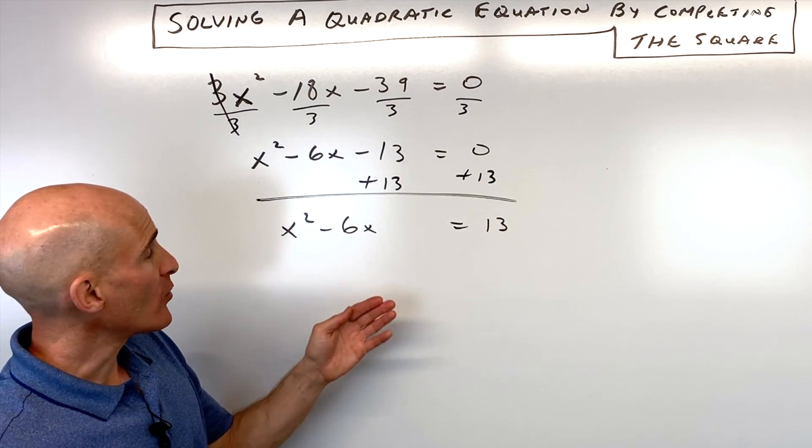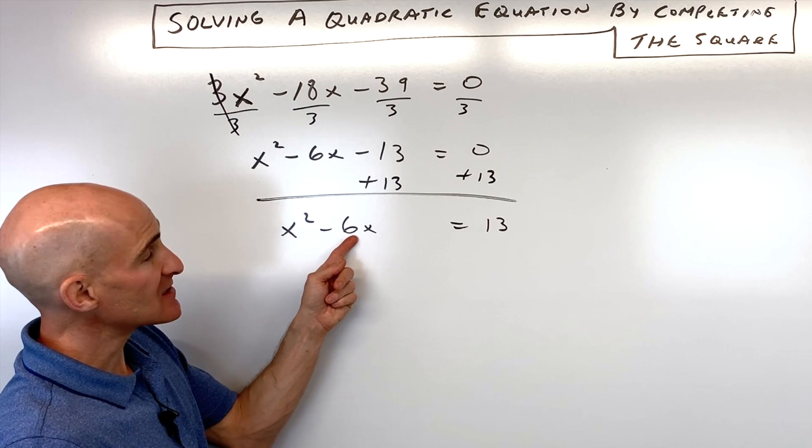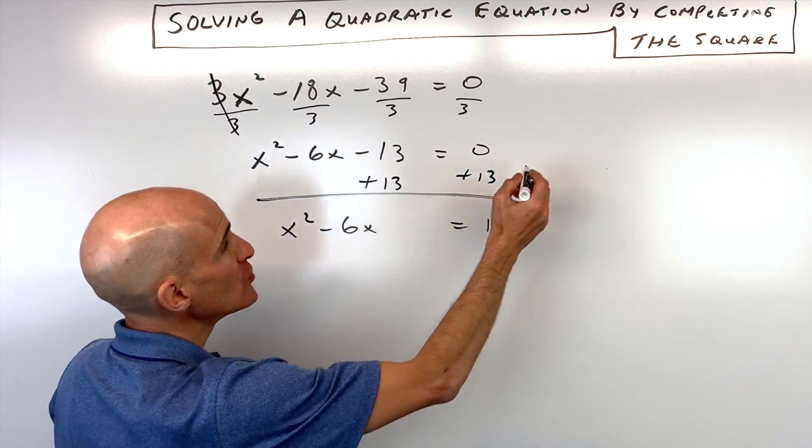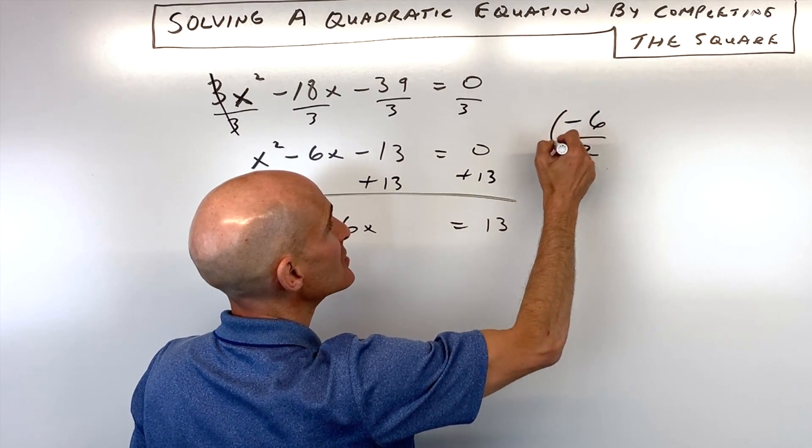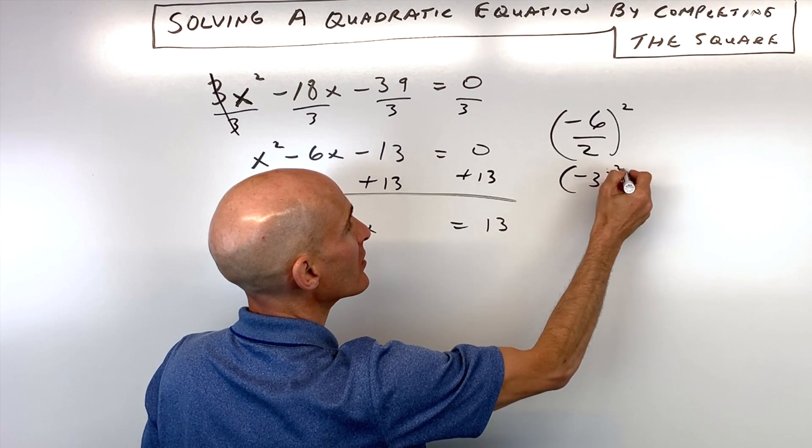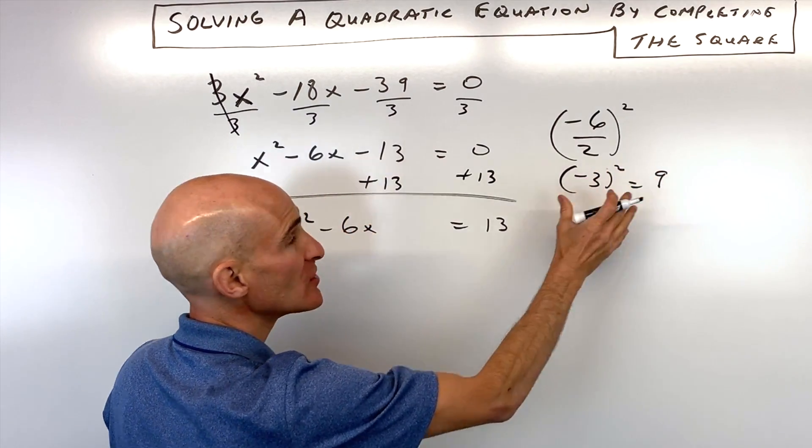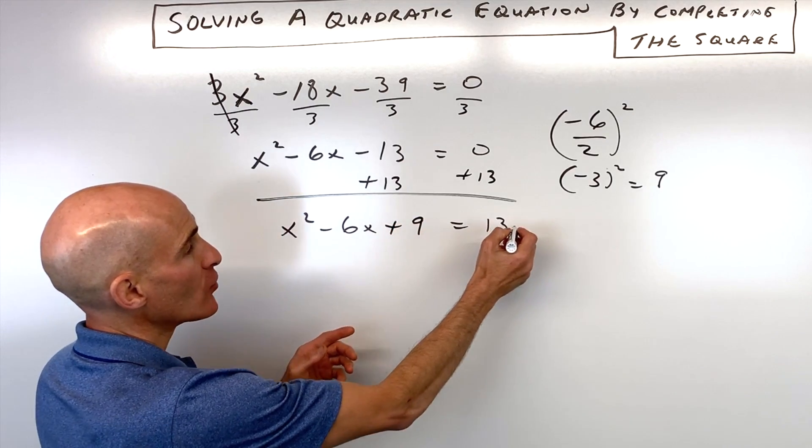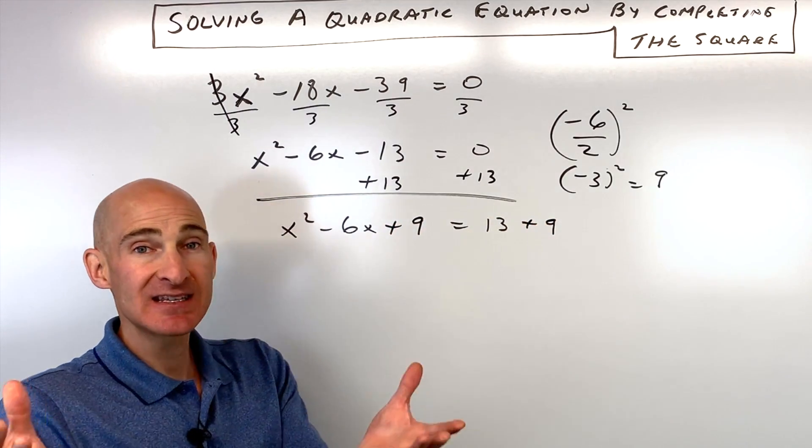So to complete the square, the third step here is you take this coefficient, the number that's in front of the x, you want to divide it by 2 and square it. So negative 6 divided by 2 squared, that's negative 3 squared, which is equal to 9. So you can do that work off to the side if you want. So what we're going to do is add 9 to the left side of the equation, we're going to add 9 to the right side to keep it balanced.